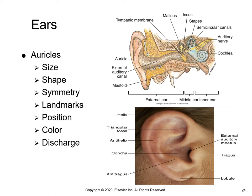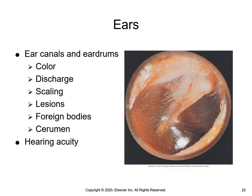Normal cerumen or earwax is dry, usually light brown to gray in color and flaky, or it may be moist and dark yellow or brown in color and sticky. The image shown is a normal right tympanic membrane. There is a cone of light at the bottom — for a right ear, the cone of light is at 5 o'clock; for a left ear, the cone of light is at 7 o'clock. A normal tympanic membrane should be translucent, shiny, and pearly gray with no tears or breaks.